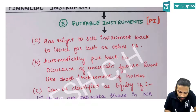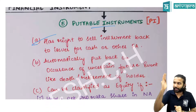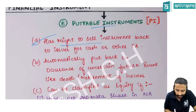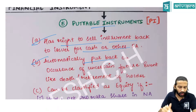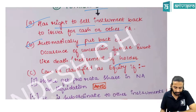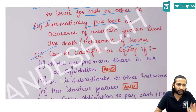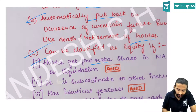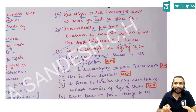Putable instruments are shares sold with a put option — the holder has a right to sell the shares back to the issuer at a particular price, or they automatically get put back upon events like death or retirement of the holder. Certain classes of putable equity instruments can be classified as equity if five conditions are satisfied: they should get only a pro-rata share in net assets on liquidation, and should be most subordinate to other instruments.